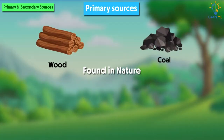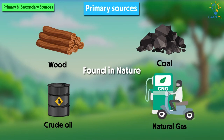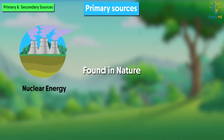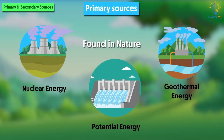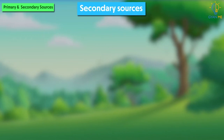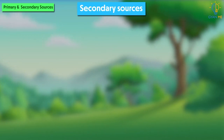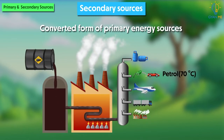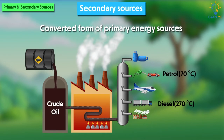Primary sources of energy are those which are found in nature. For example, wood, coal, crude oil, natural gas, etc. Other primary sources of energy are nuclear energy, geothermal energy, potential energy — that is, energy due to earth's gravity — etc. While secondary sources of energy are usually those sources which are converted from a primary energy source. For example, petrol and diesel, which are converted from crude oil, and LPG, which is a converted form of natural gas.